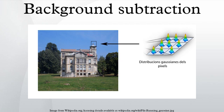However, background subtraction is generally based on a static background hypothesis, which is often not applicable in real environments. With indoor scenes, reflections or animated images on screens lead to background changes. In the same way, due to wind, rain, or illumination changes brought by weather, static background methods have difficulties with outdoor scenes.